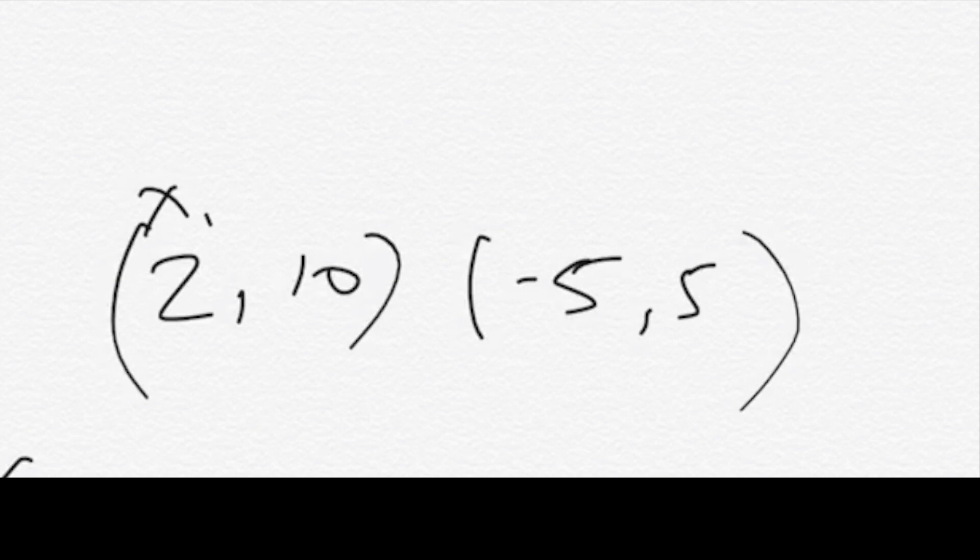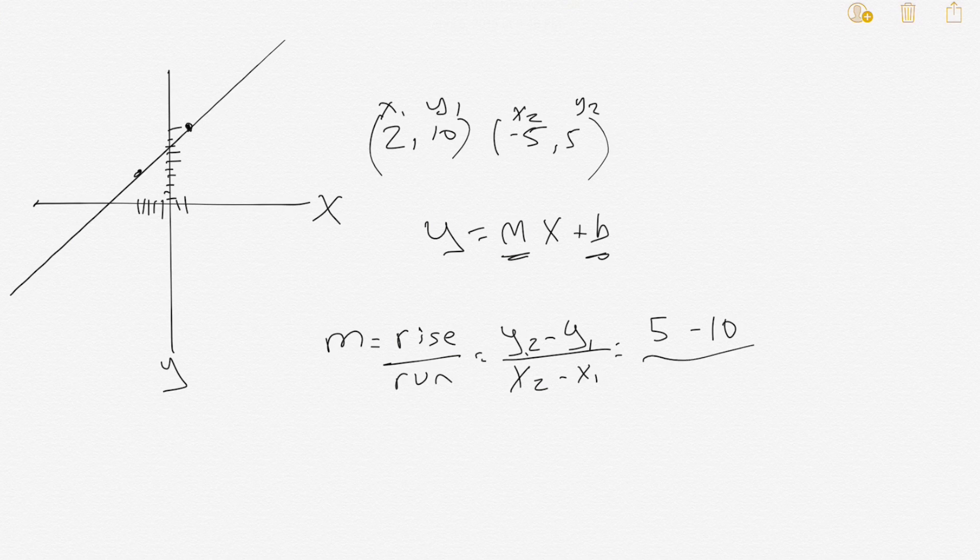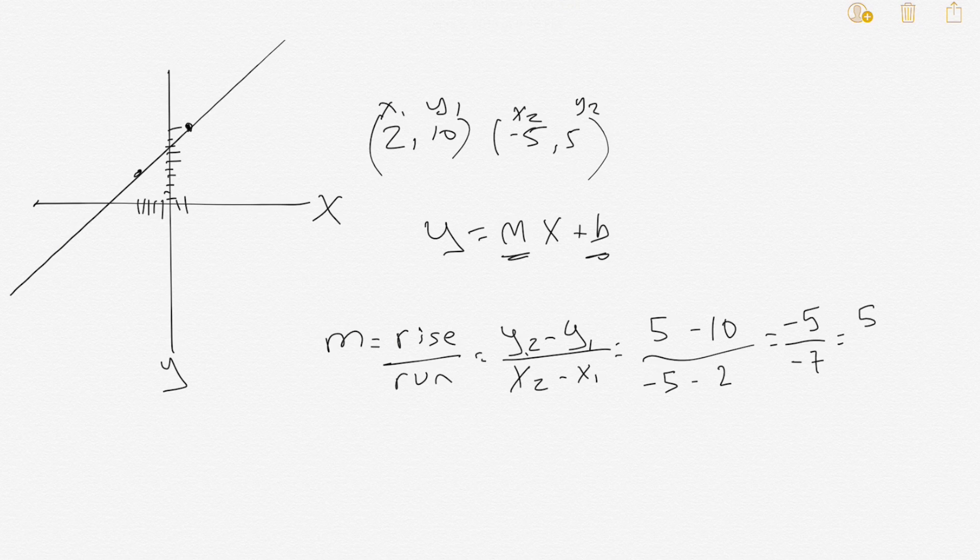Let's call this x1 and y1, and this one x2 and y2. So y2 is 5 and y1 is 10, and x2 is -5 minus x1 which is 2. 5 minus 10 is -5. -5 minus 2 is -7. So the slope is -5 over -7 which simplifies to 5/7. The slope is 5/7.